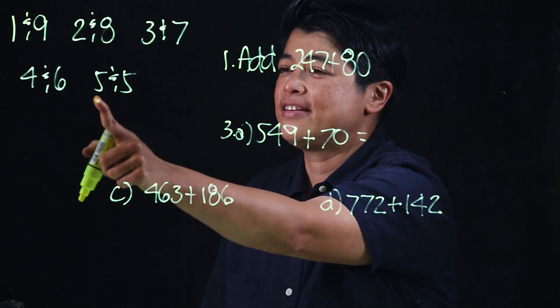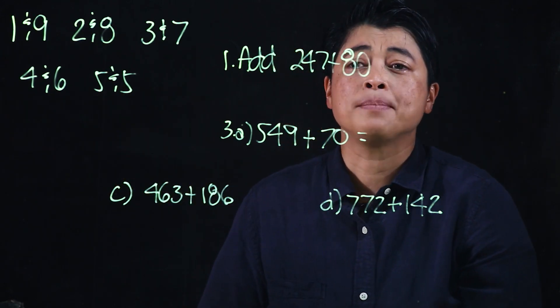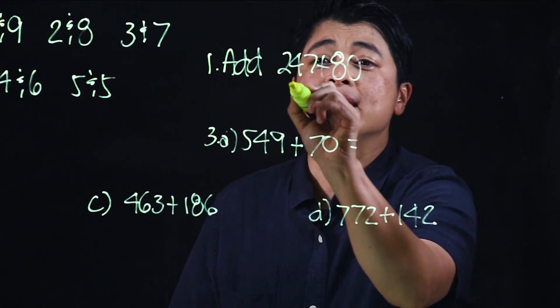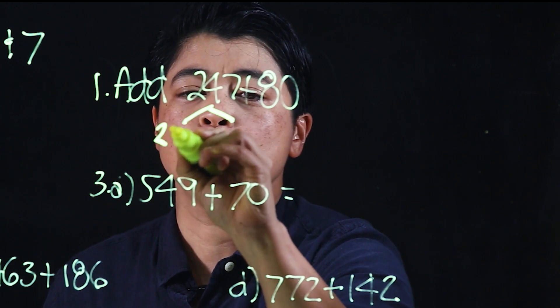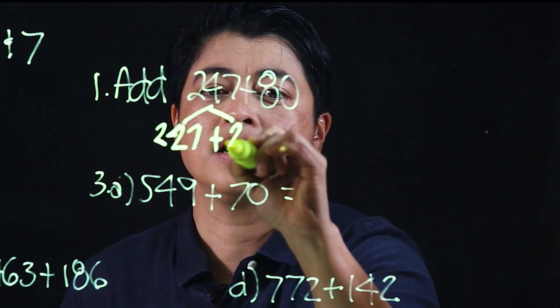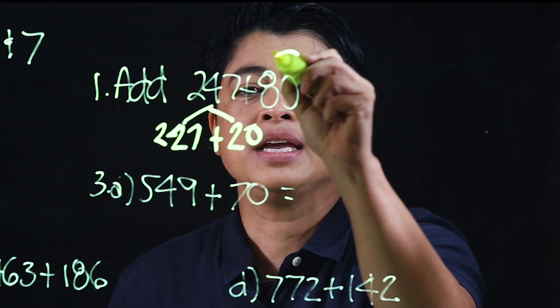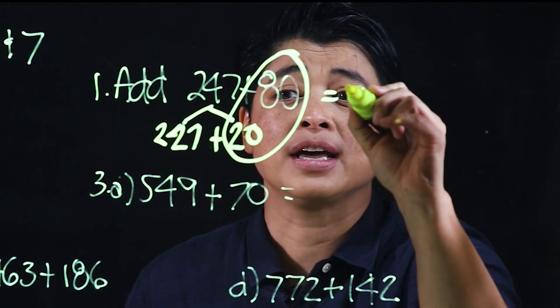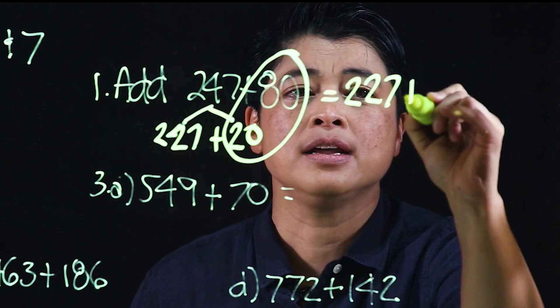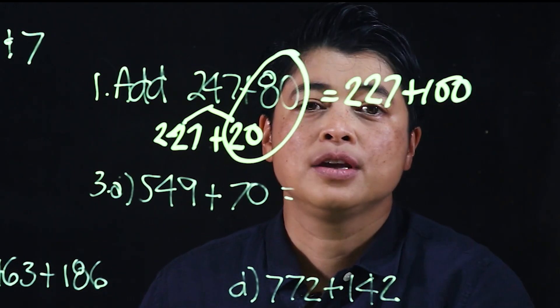In this problem, they want us to split 227 plus 80. We split it as 227 plus 20, and if we add these together, that's a hundred. So that's 227 plus 100, which makes it 327.